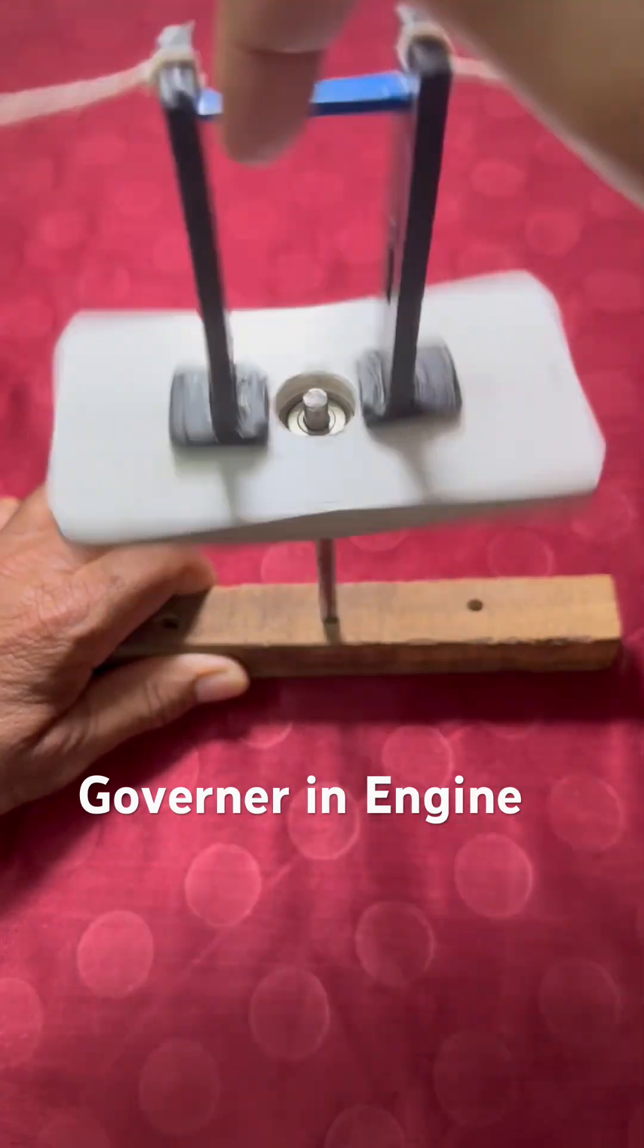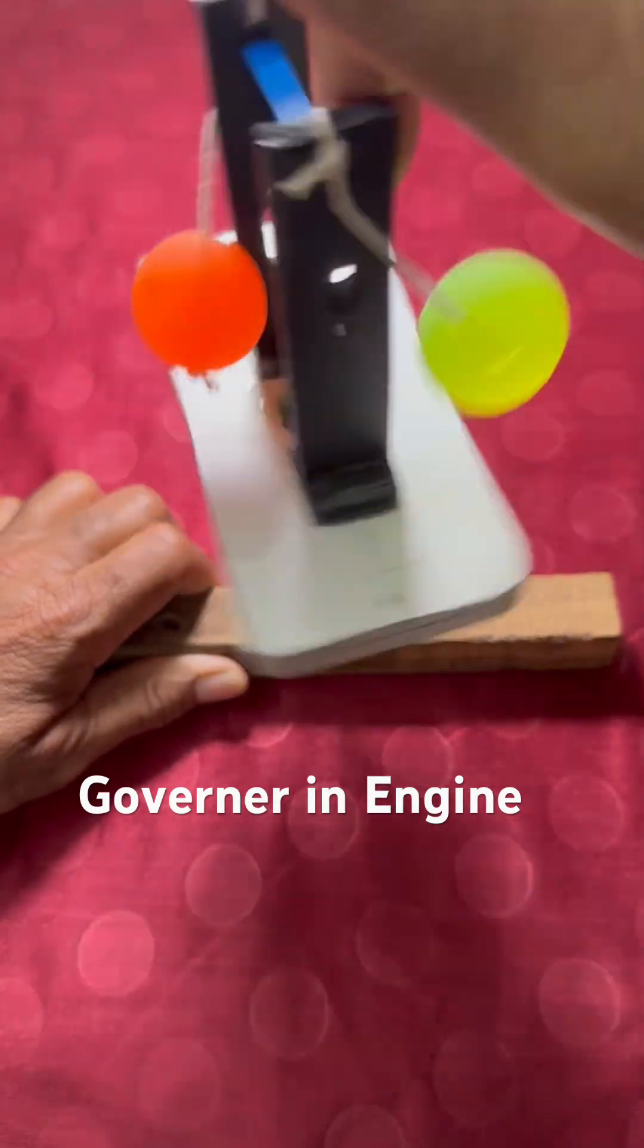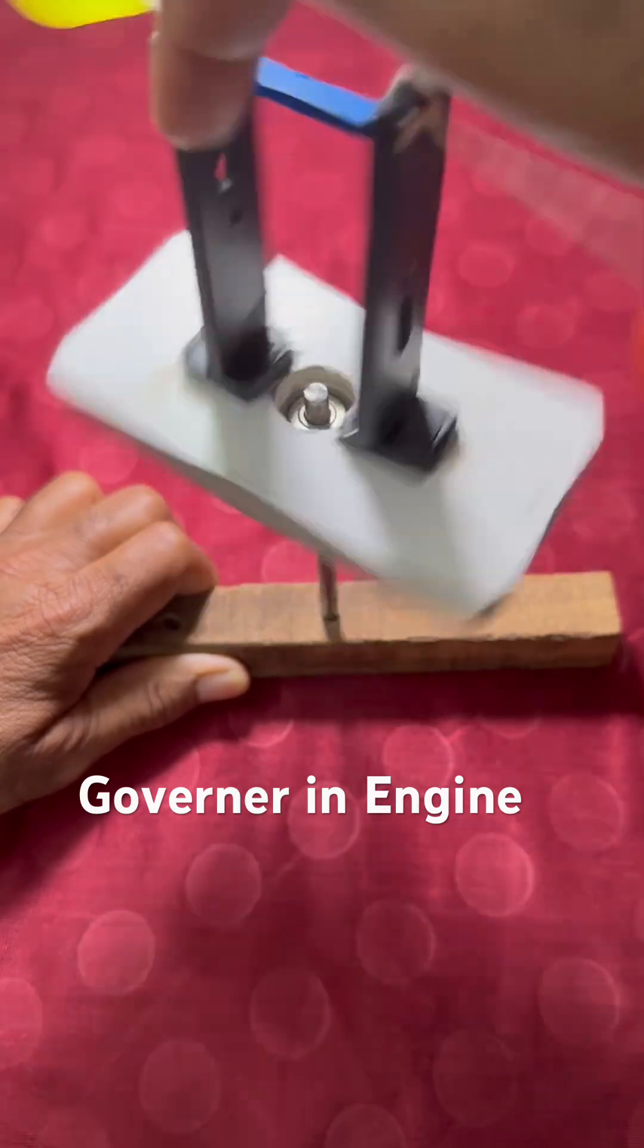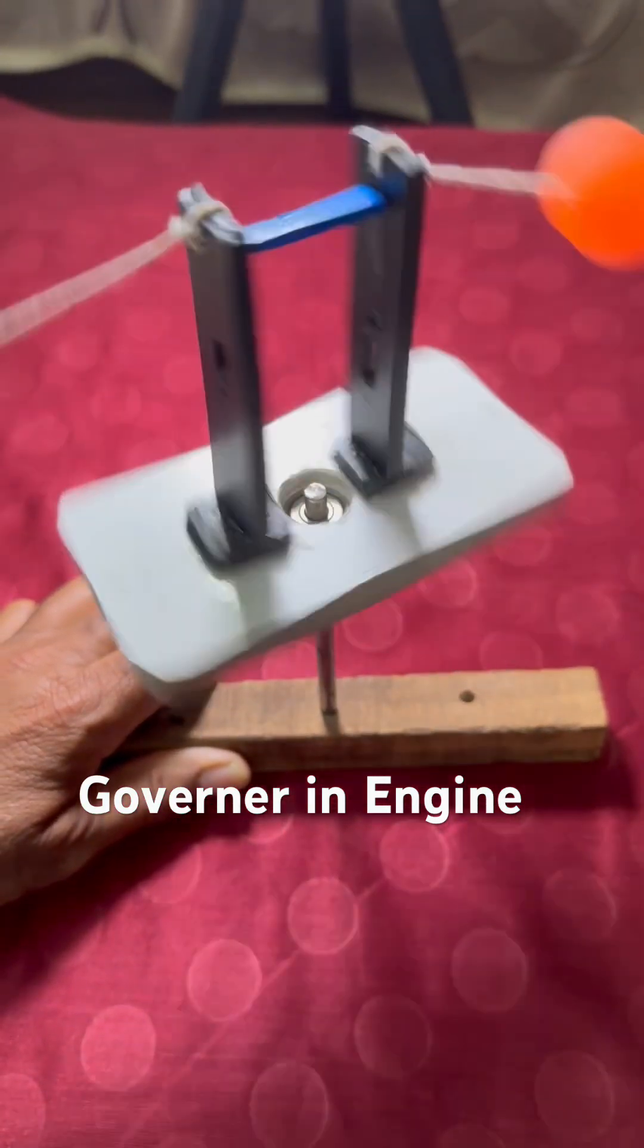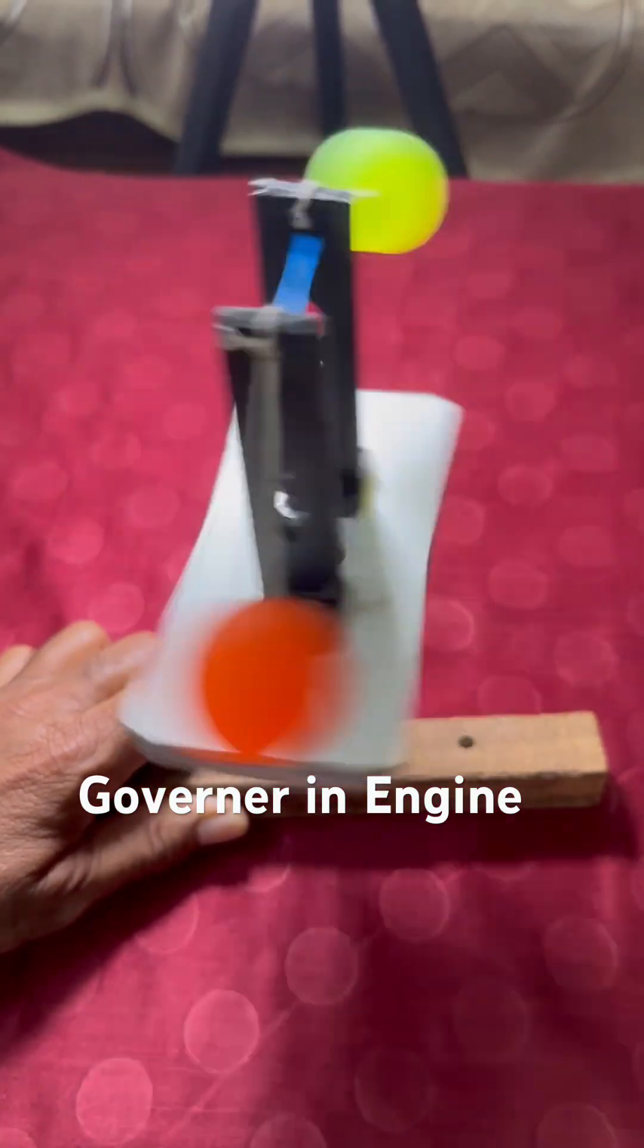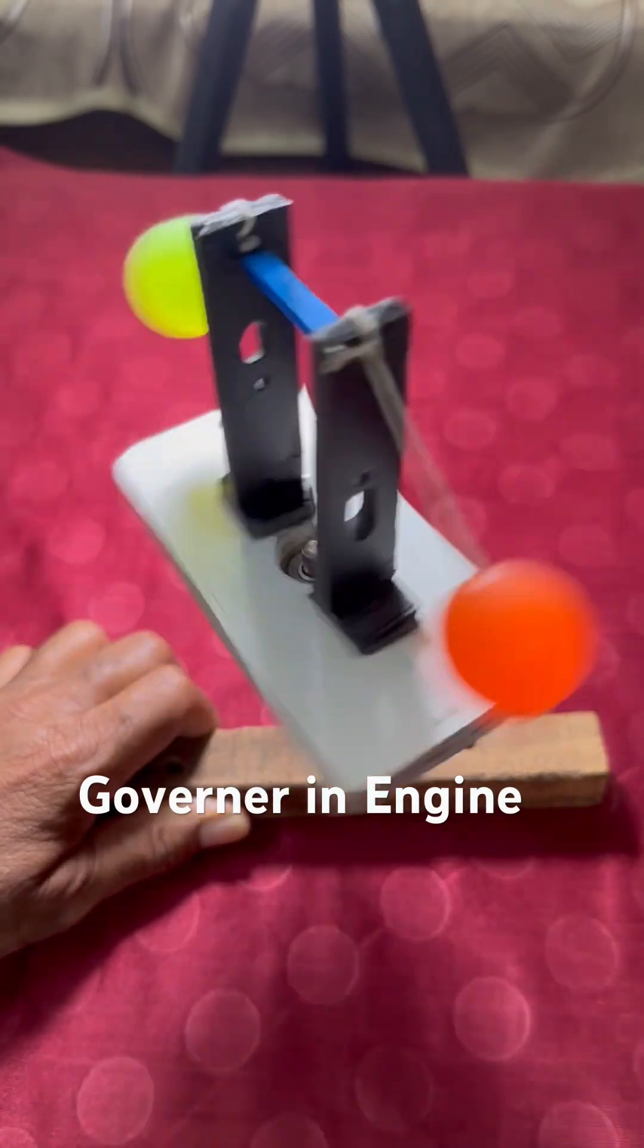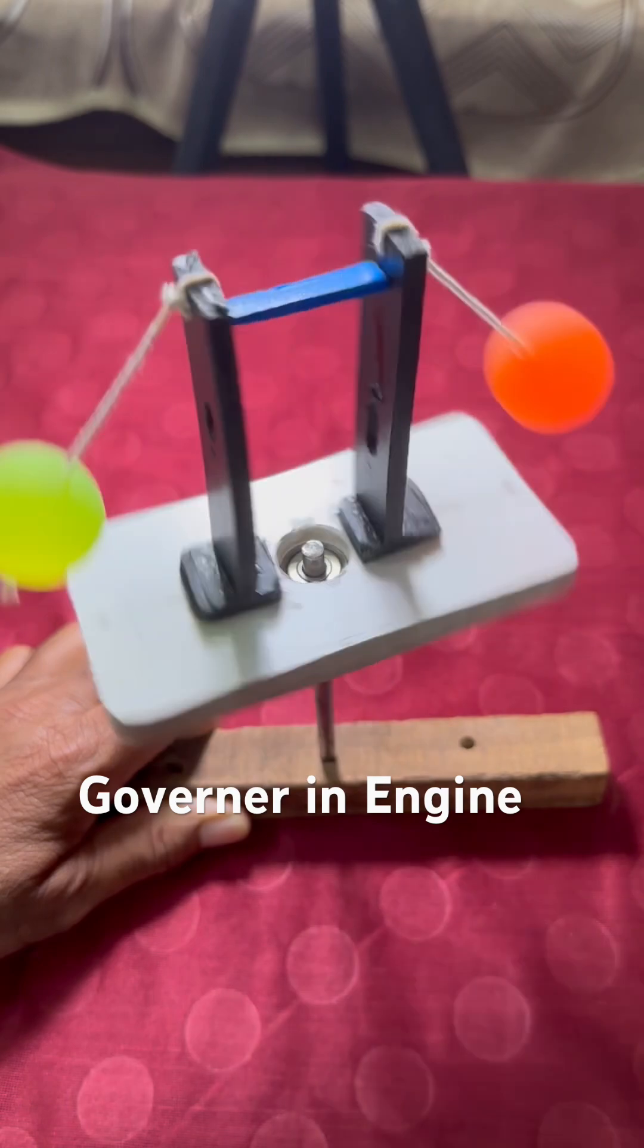You can see when my balls move or the system moves, the balls they become almost horizontal and thereafter speed reduces and they fall down become vertical.